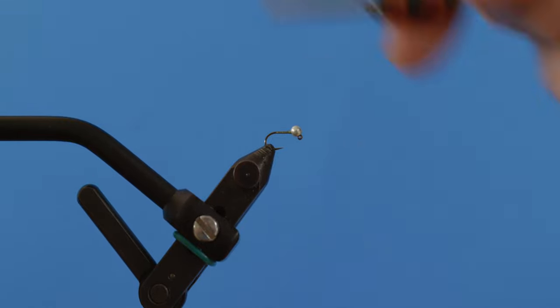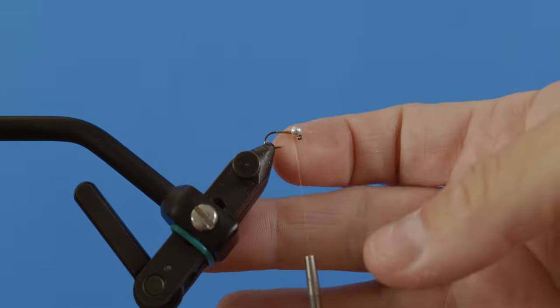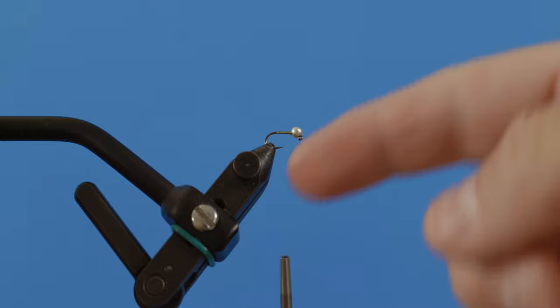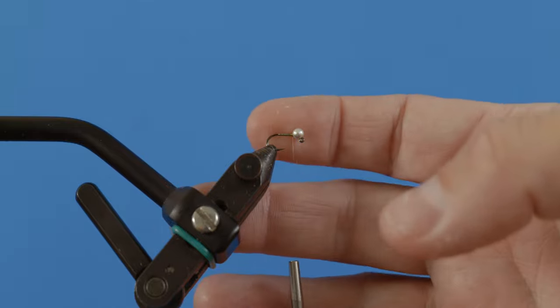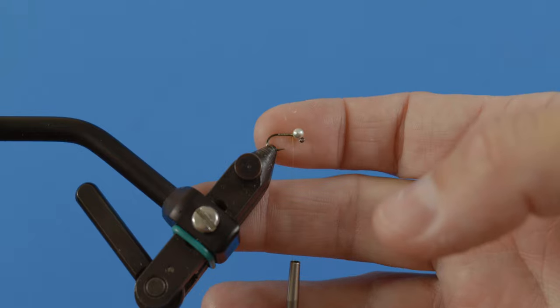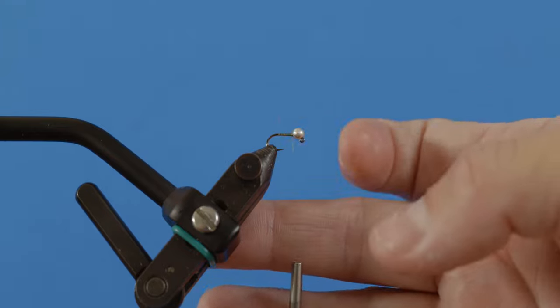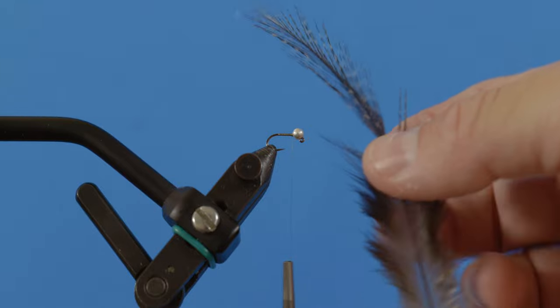So I've got a size 16 Umpqua hook, this is a 400 BL in the vise. I like this hook a lot with a three millimeter Hanak silver bead. I tie this fly in a 20 and 18, 16 in that range, and then I'll vary the bead size depending on the water type.